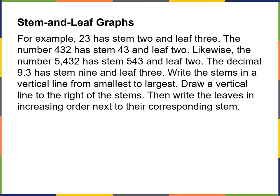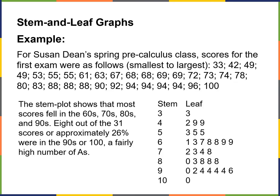The decimal 9.3 has stem 9 and leaf 3. Write the stems in a vertical line from smallest to largest. Draw a vertical line to the right of the stems, then write the leaves in increasing order next to the corresponding stem. For example, Susan Dean's spring pre-calculus class scores for the first exam ranged from smallest to largest, with values from 33 to 100.